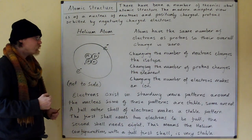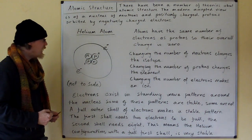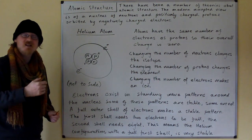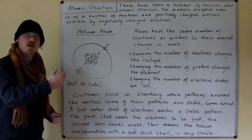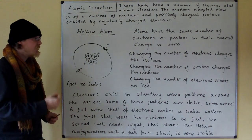Electrons exist in standing wave patterns around the nucleus. These electrons actually exist as standing waves around the nucleus. Some of these patterns are stable, some are not.